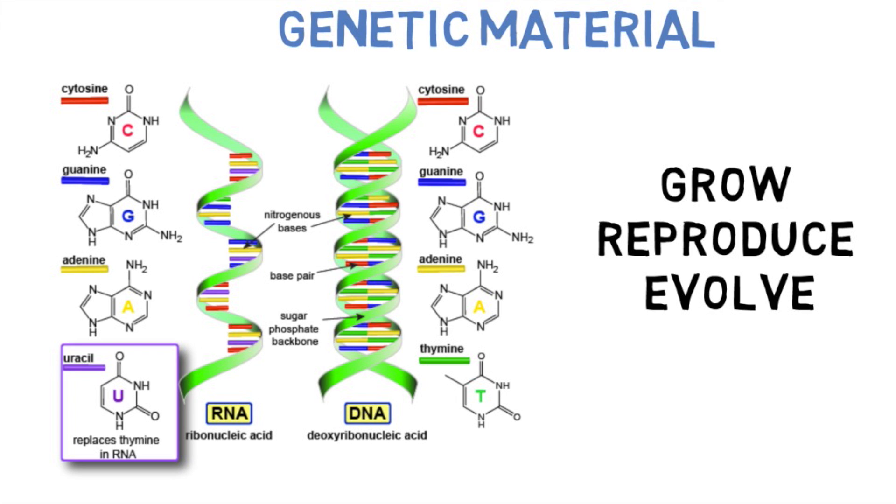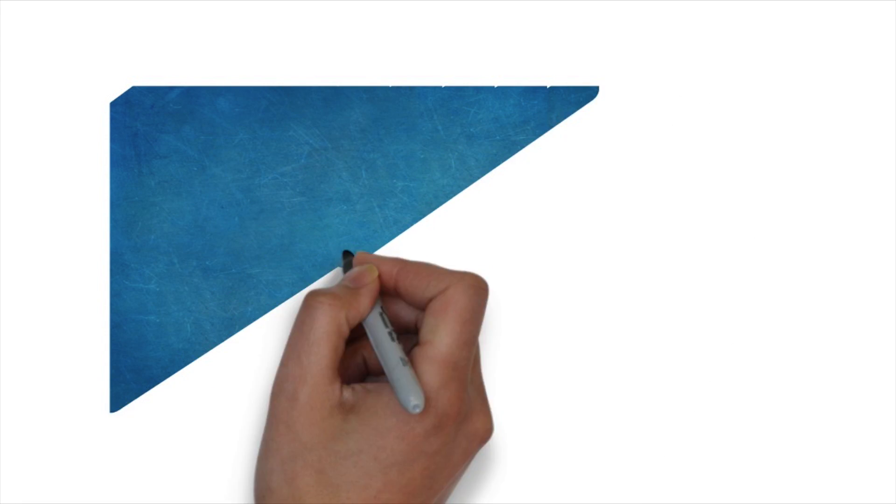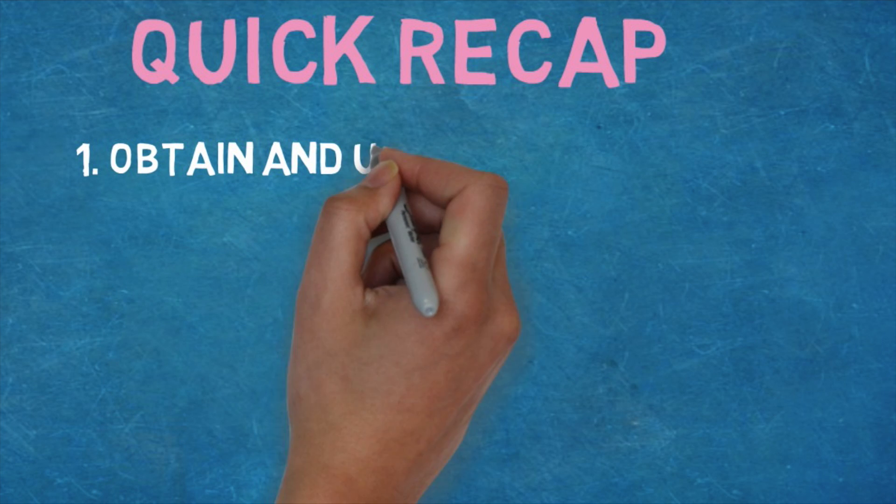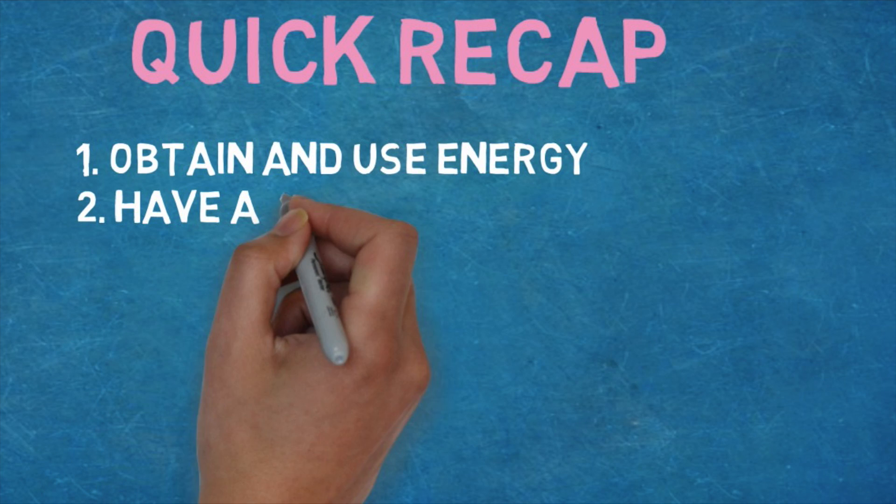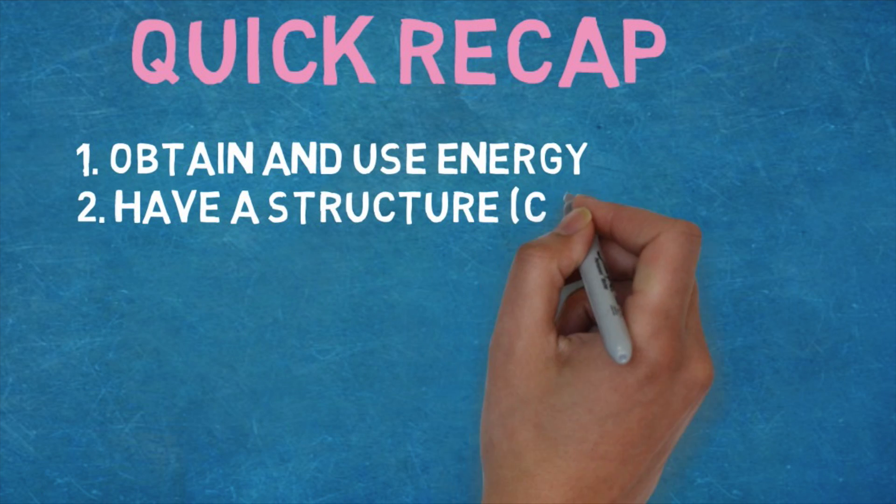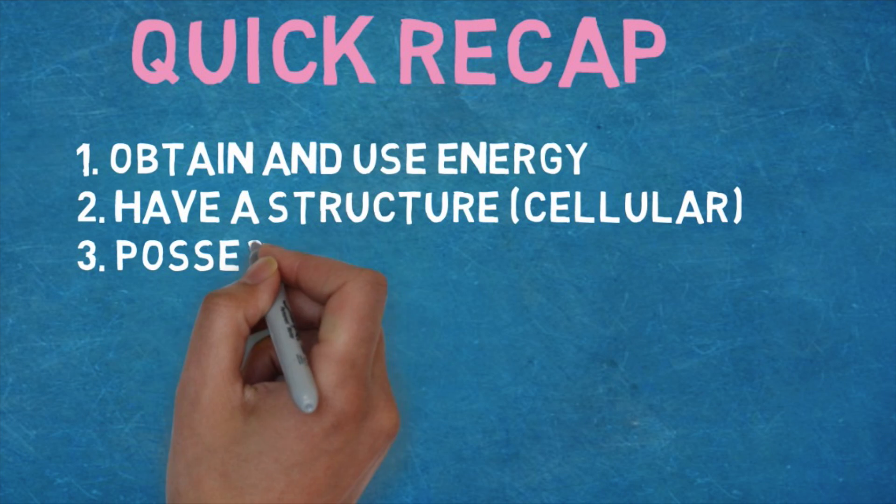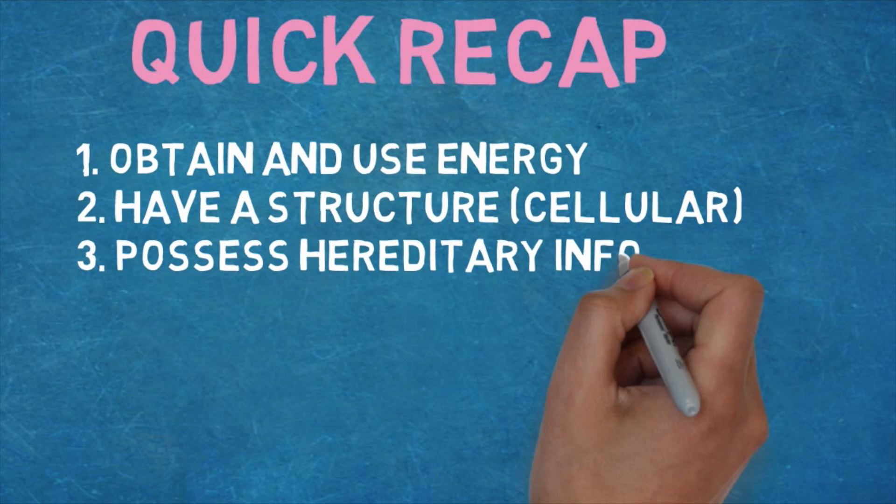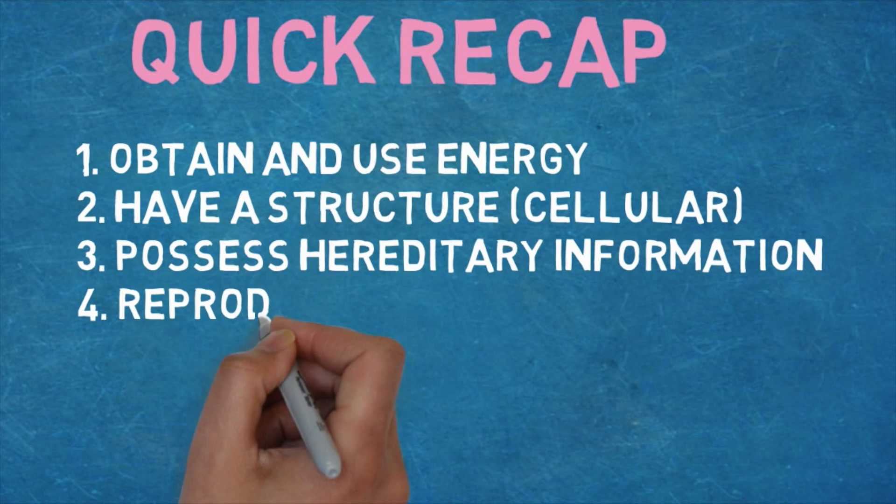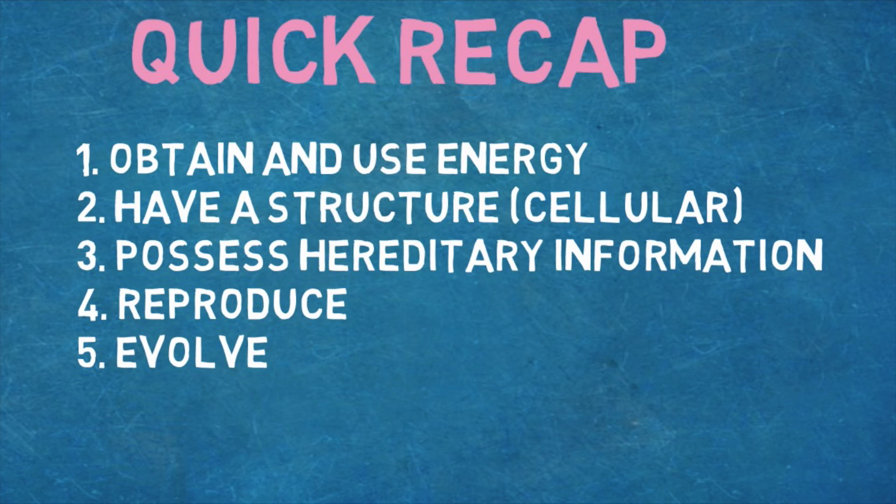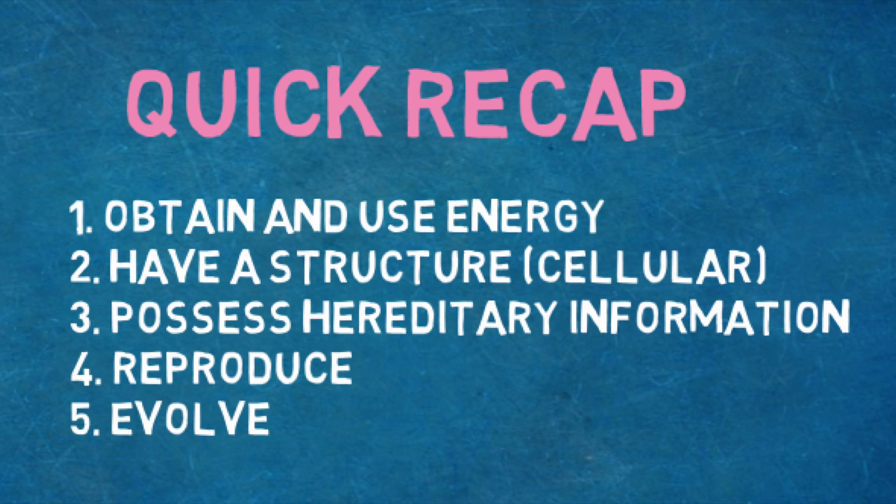All right guys, that wraps up the video. I hope you were able to get a good foundation on what most of your instructors and textbooks will define as the five fundamental characteristics of life. I just want to do a quick recap: the first being that all organisms on this planet that are considered living must be able to obtain and use energy. The second is that they must have a structure—this is the cell at the very fundamental level. The third is that they must possess hereditary information, that is some form of DNA. The fourth is that they must be able to reproduce, of course, to create offspring to continue to live on. And the fifth is that they have to be able to evolve. This takes many years but is an incredible process that allows organisms to adapt to their changing environments so they can grow, become stronger, and live on for many more years. All right guys, that wraps up the video. See you next time on STEM Stream.